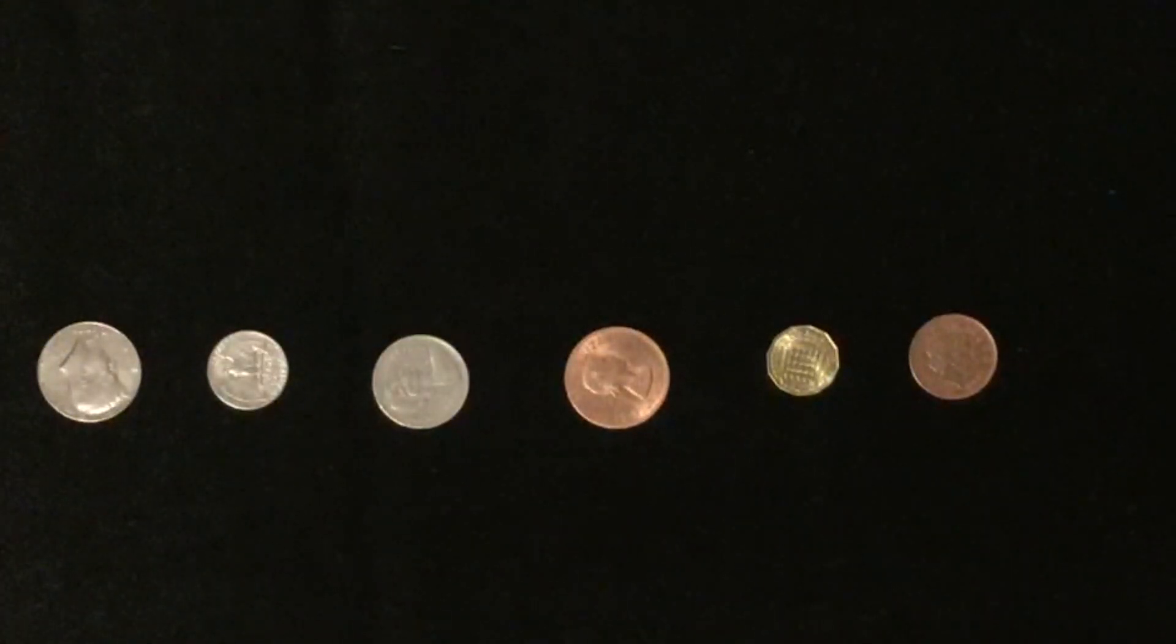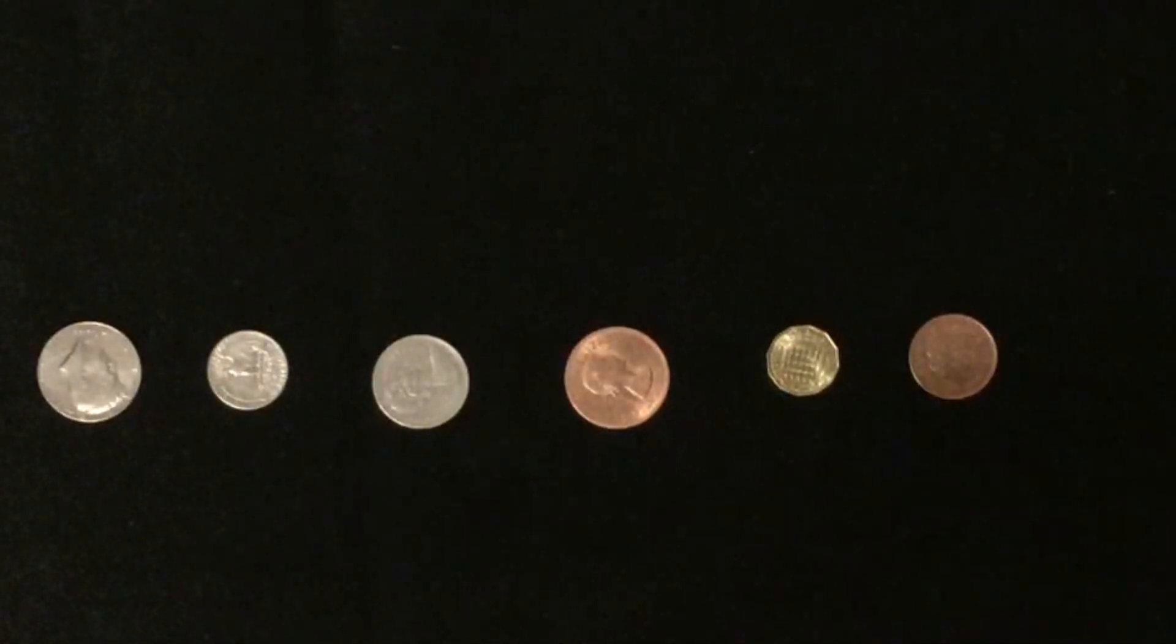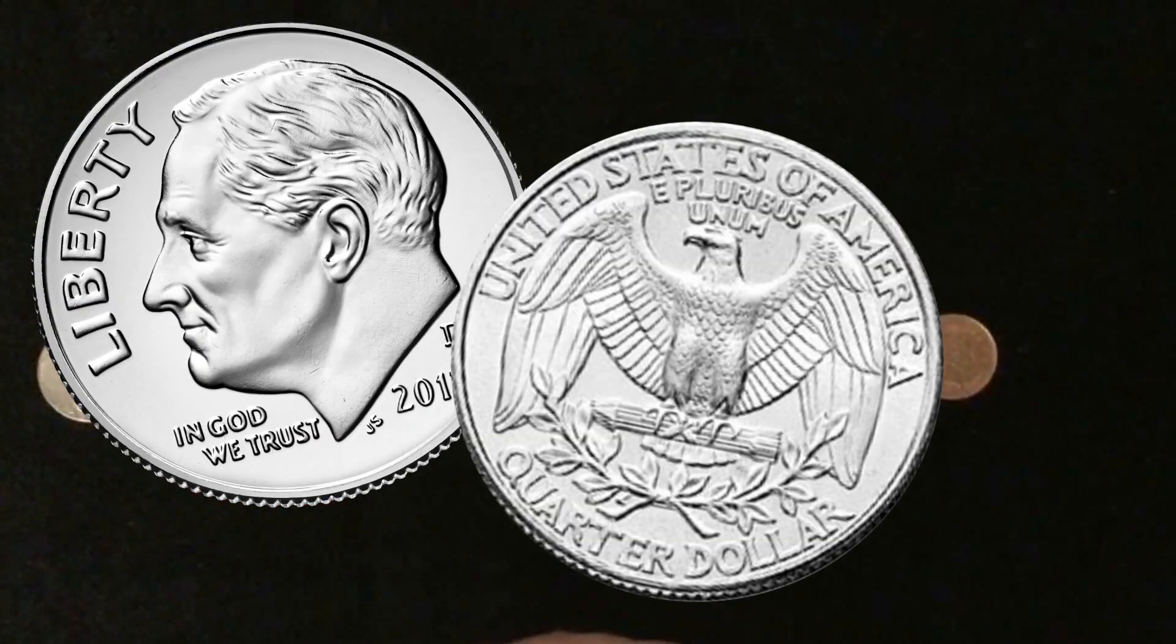You're going to ask the spectator to turn over these coins and pick a coin, and you're going to be able to tell them exactly—not a guess, not a 50-50—it's an exact call on what they will have under their hand, either a head or a tail.